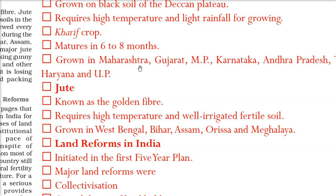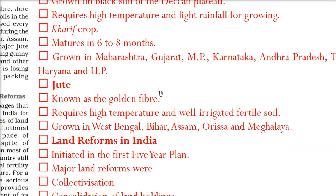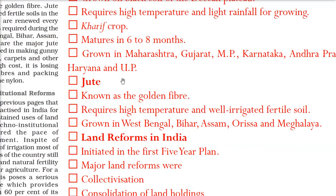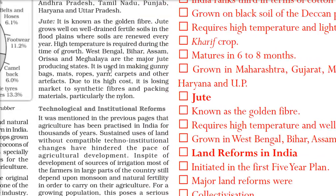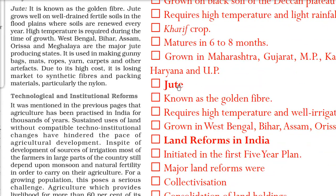Cotton is grown in Maharashtra, Gujarat, Madhya Pradesh, Karnataka, Andhra Pradesh, Tamil Nadu, Punjab, Haryana, and Uttar Pradesh. You have to remember these states.